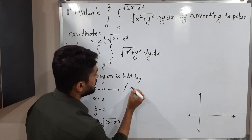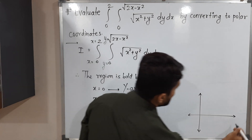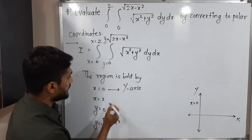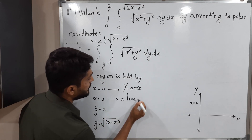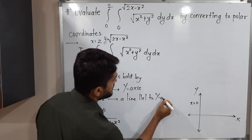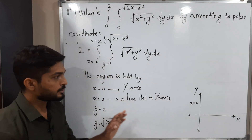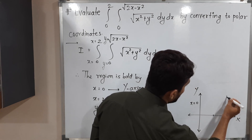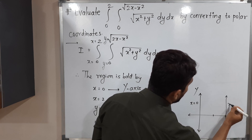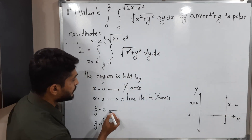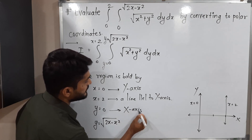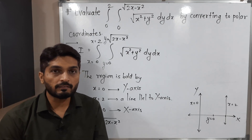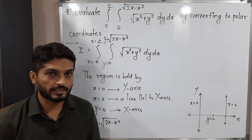X = 0 is the equation of the Y-axis. X = 2 is the equation of a line parallel to the Y-axis, passing through X = 2. Y = 0 is the equation of the X-axis. For the last boundary, we have Y = √(2x − x²). To remove the square root, I will square both sides.